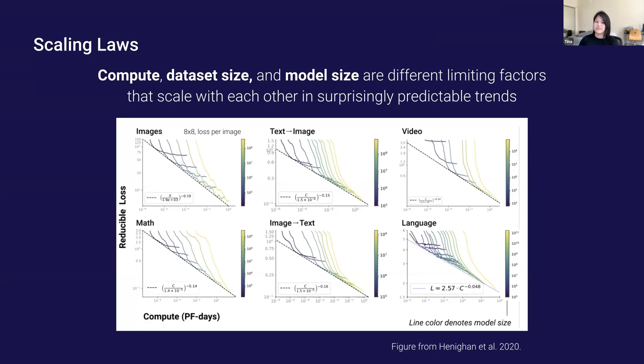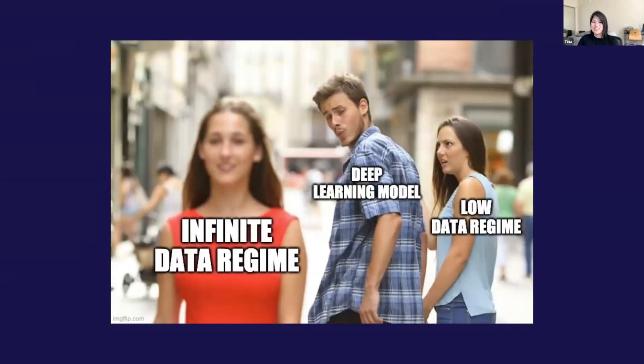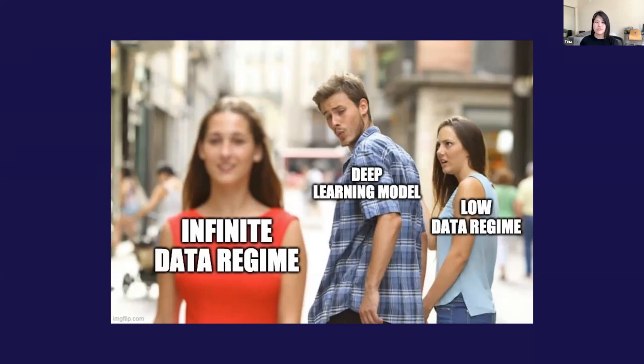Recently, scaling relationships were found for transfer learning from pre-trained English text models to Python. Scaling laws for transfer are important because the scaling relationships can help explain how to work in a limited data regime. In an ideal world you'd have an infinite amount of data, limited only by compute and model size. But getting a large quantity of high-quality data is a non-trivial task and is oftentimes near impossible, so most problems we want to study are actually in this low data regime.